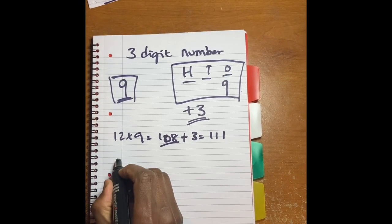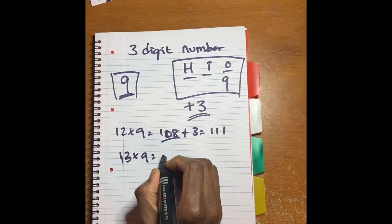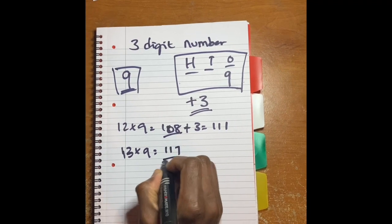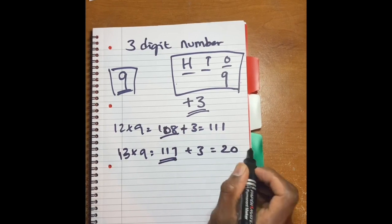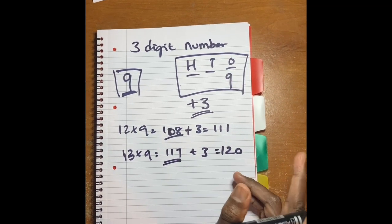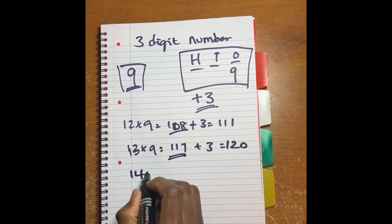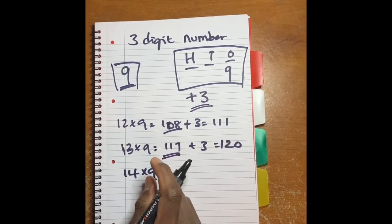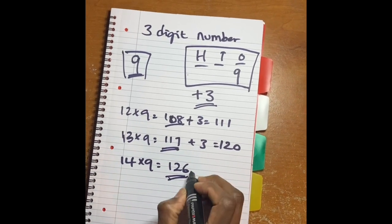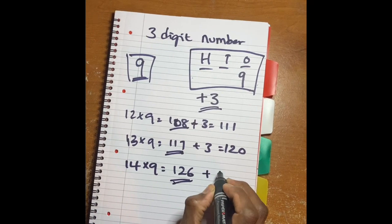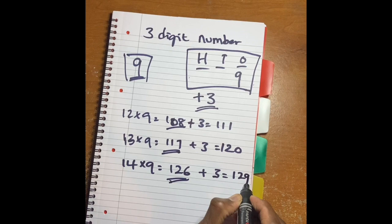Thirteen times nine, which is 117. If I add 117 plus three, it'll be 120. Oh, it's not working. Let me see. Fourteen times nine is what? 126. 126, let me add three. Your answer is going to be what? 129.